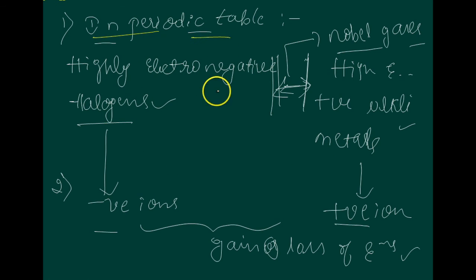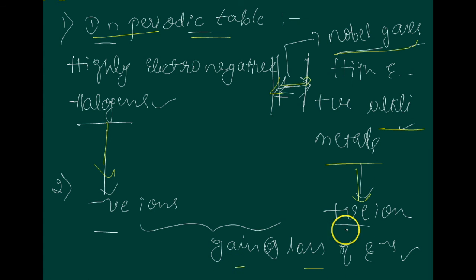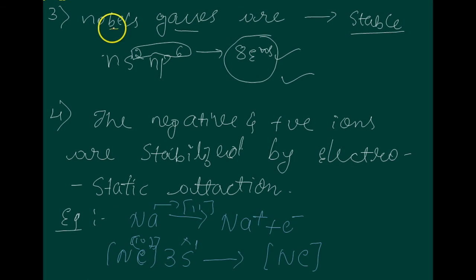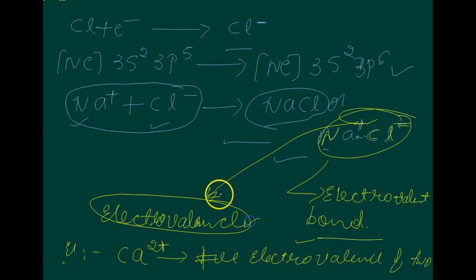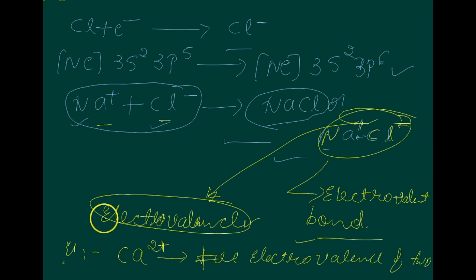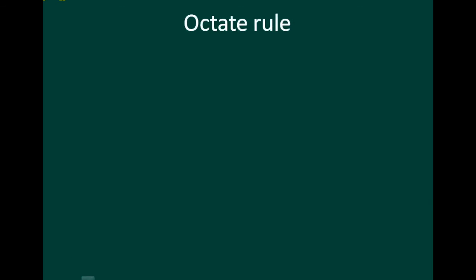In the periodic table, highly electronegative halogens and highly electropositive alkali metals have noble gases in between them. Halogens form negative ions; alkali metals form positive ions by gain or loss of electrons. Noble gases are stable because they have 8 electrons in the outer shell. The negative and positive ions are stabilized by electrostatic attraction — this is the electrovalent bond — and the charges on the ions are called electrovalence.